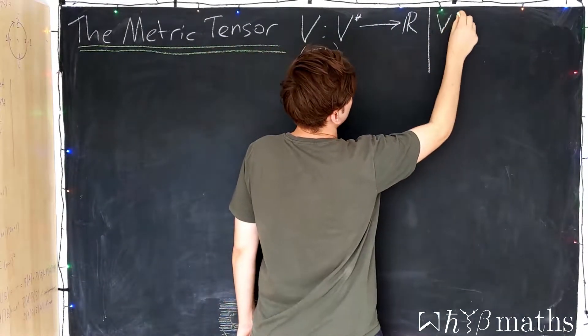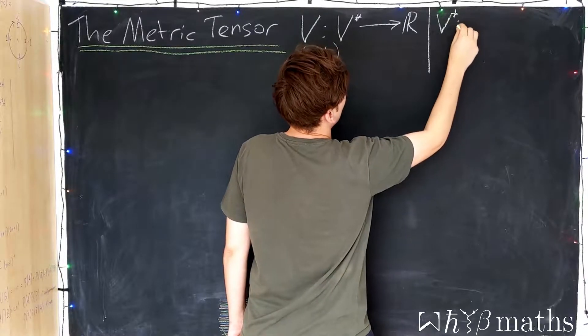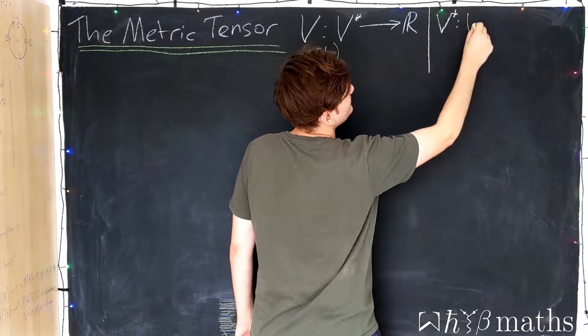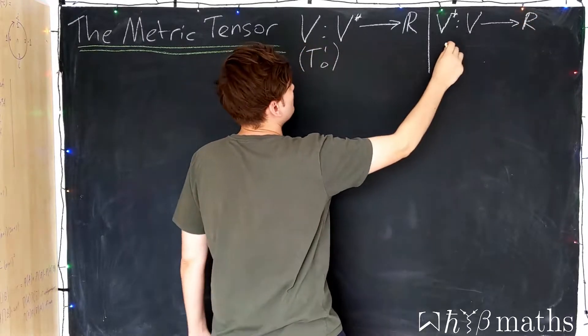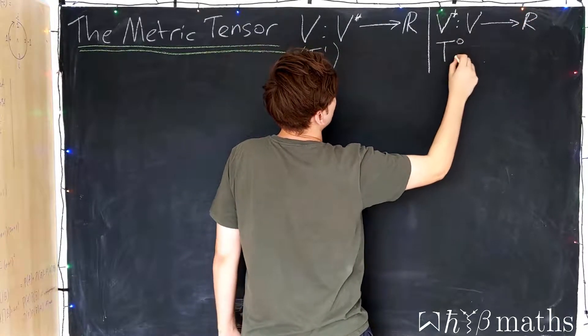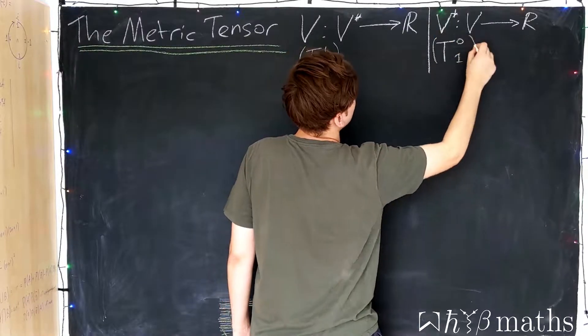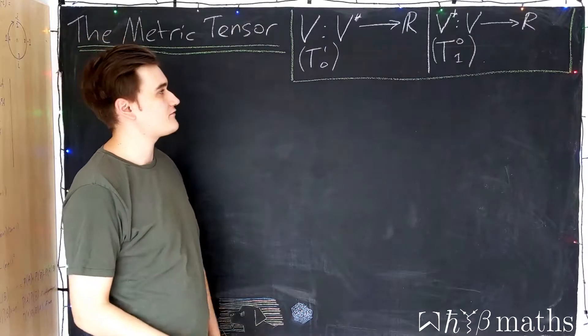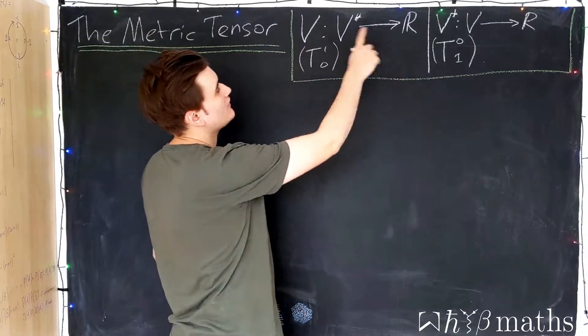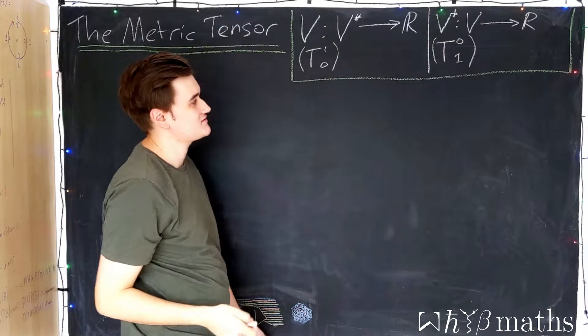Likewise, we have the dual vectors as linear maps from the vector space into the real numbers, or T(0,1) tensors. So far we have no way of going between the vector space and the dual space.